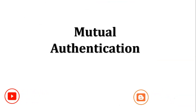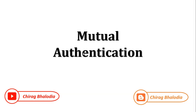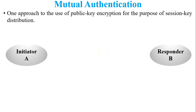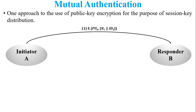Let's start with mutual authentication. We are discussing asymmetric encryption, so the question is: how is public key encryption used in the distribution of a session key? Consider a scenario with two users — A is the sender and B is the receiver. User A wants to communicate with user B, so A sends a request to B. This request message is encrypted using the public key of B.